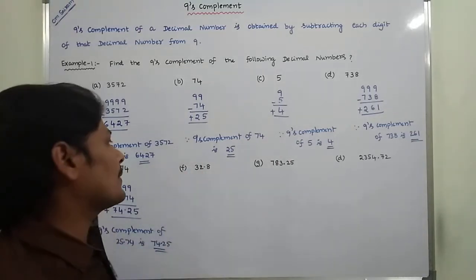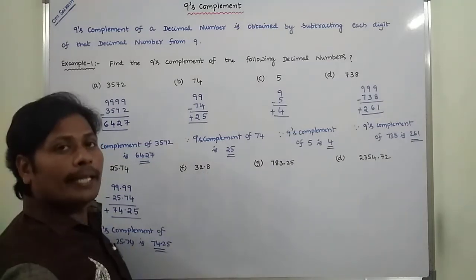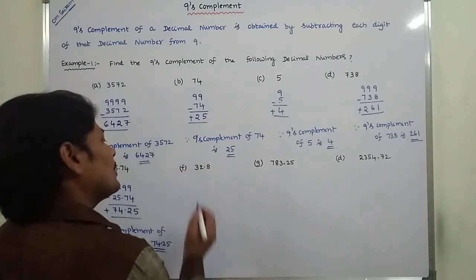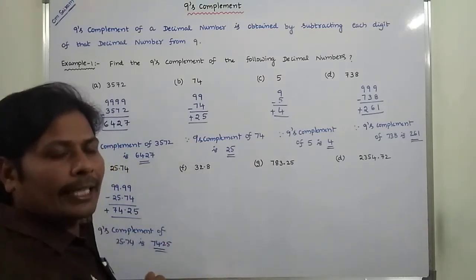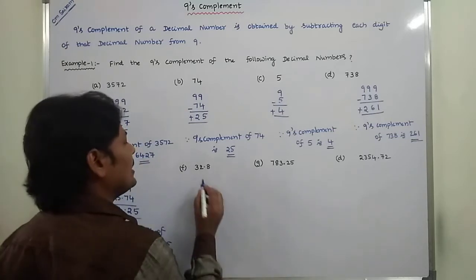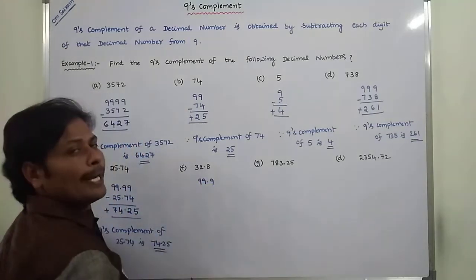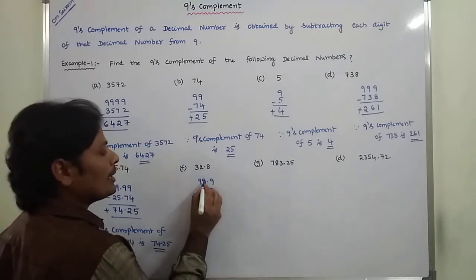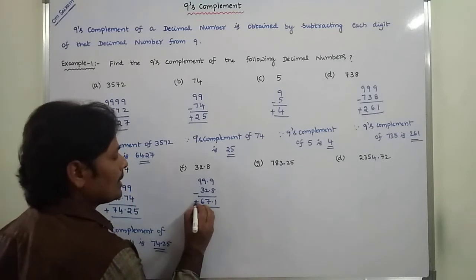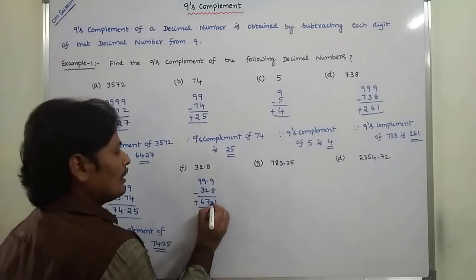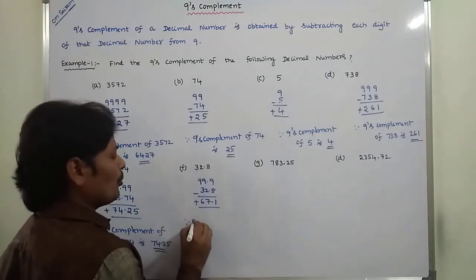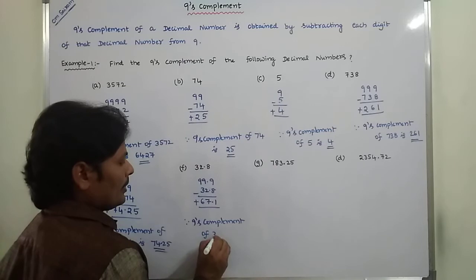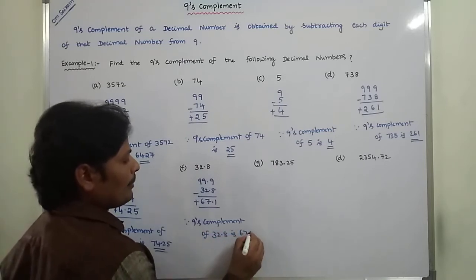Next, find out the 9's complement of 32.8. How many digits are there? Three digits: before the decimal point 2 digits, after the decimal point 1 digit. Each digit is subtracted from 9, so 99.9 minus 32.8. 9 minus 8 is 1, 9 minus 2 is 7, 9 minus 3 is 6. So the result is 67.1. Therefore, the 9's complement of 32.8 is 67.1.